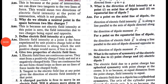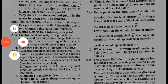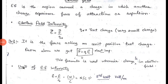Now the next question is: define electric field intensity at a point. Electric field intensity is defined as the force acting on a unit positive charge placed in the electric field.